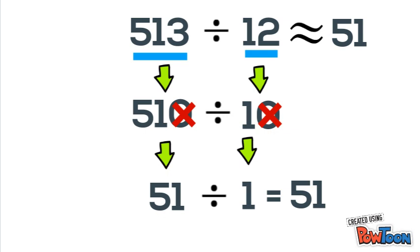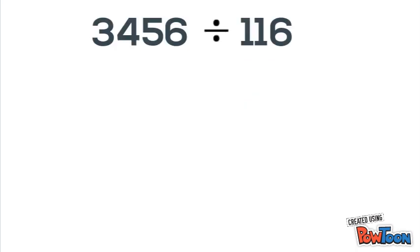Next example: 3456 divided by 116. First we look at our divisor, 116, and see its closest zero number is 100, so we'll round it to 100. Now 3456 we can round to the nearest 100, so we'll round it to 3500.